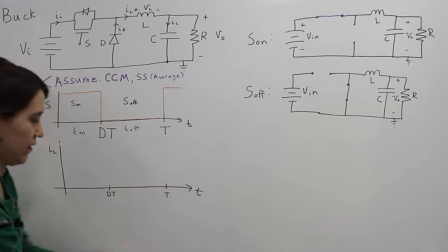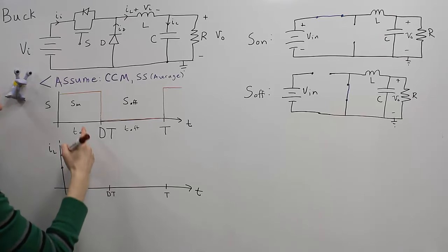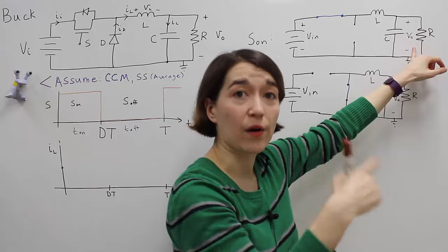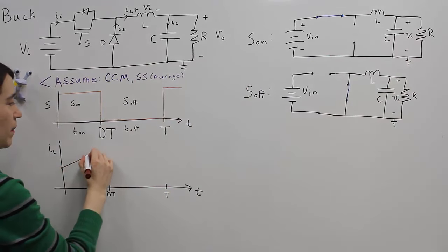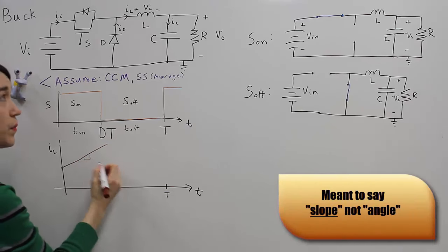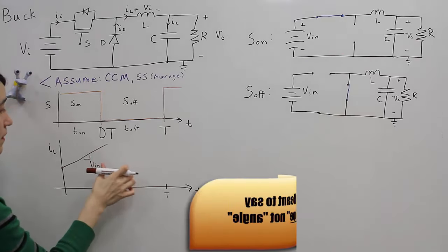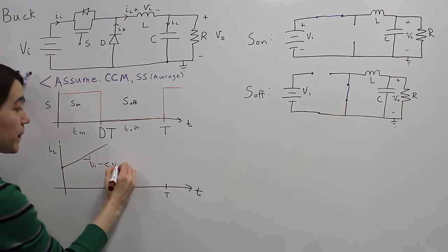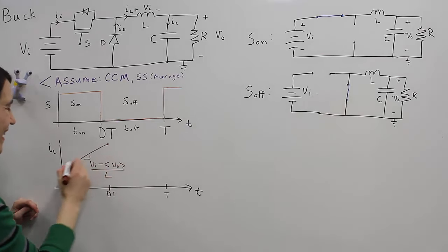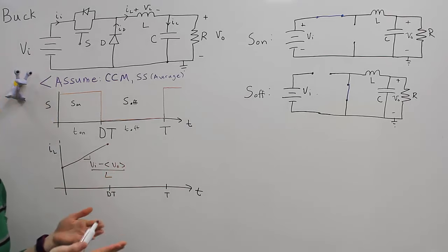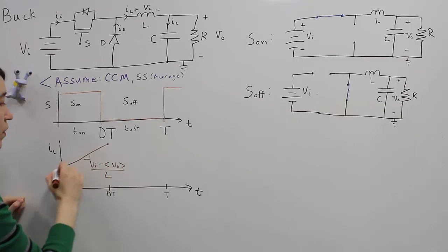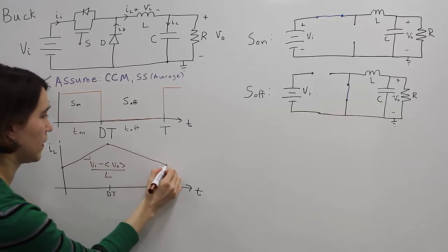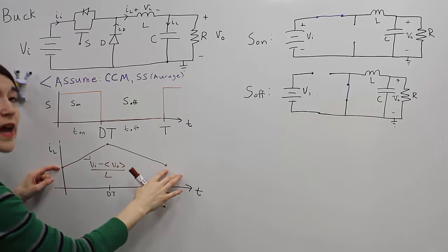With those assumptions, we go back to the inductor current and draw an approximate waveform. During S on, the voltage over the inductor will be V_in minus V_out (average), so the current ramps up with slope (V_in − ⟨V_out⟩) / L. During S off, the inductor voltage is −V_out, so the slope is −⟨V_out⟩ / L and the current ramps down. Because we assume steady state, the current must return to the same exact point over one full period.